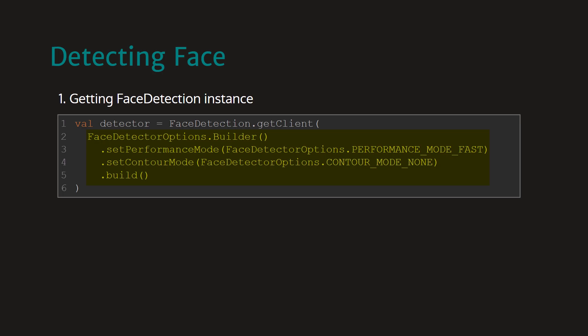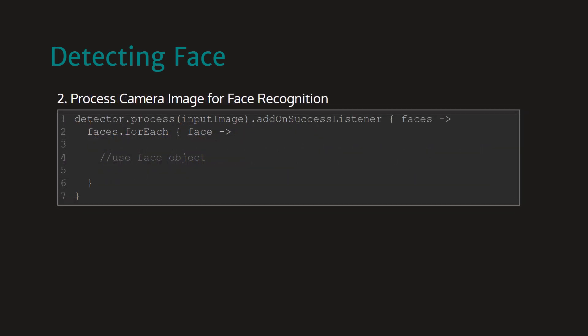We are setting the performance mode to fast, then we set the contour mode to none, which means it will not detect face contours. Finally, the same as the QR scanner, we will process the image with our detector instance and attach an onSuccess listener. This listener will give the list of faces found in the image, and now we can draw a box for each face on the camera preview.